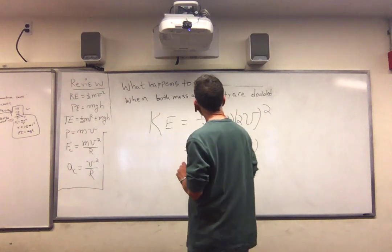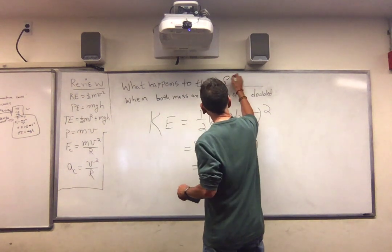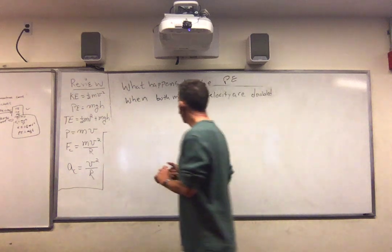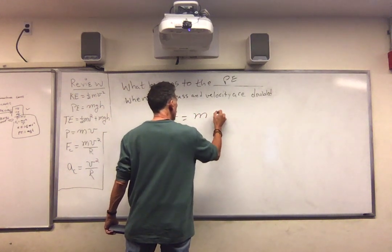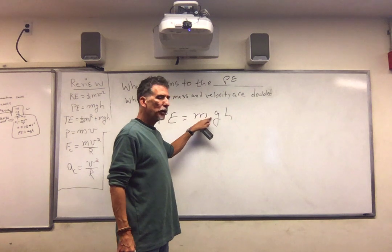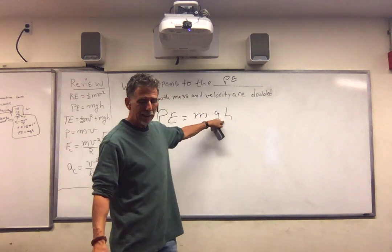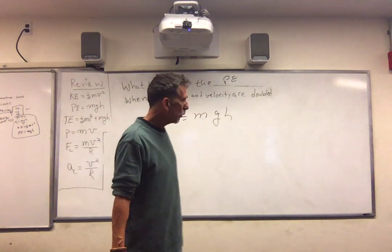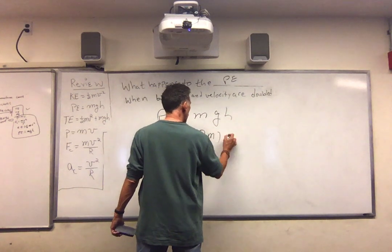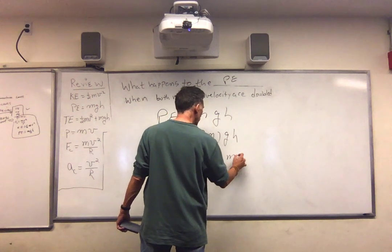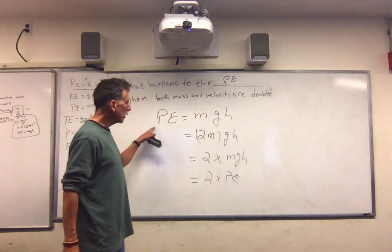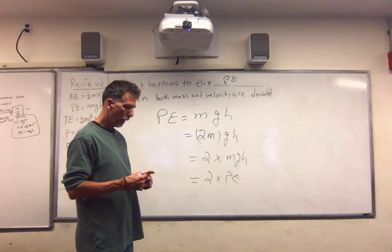Let's do the same thing, doubling the mass and velocity for potential energy. Potential energy, gravitational potential energy is simply mgh. We're doubling the mass. We're doubling the velocity. Potential energy doesn't have velocity in it. G is the acceleration due to gravity. It's a constant. Ten meters per second squared is what we're taking it to be. H is the height. It has nothing to do with velocity. So this simply becomes two m times g times h. So it's two times mgh. And so it's two times the potential energy. Simply. What happens is the potential energy is doubled.